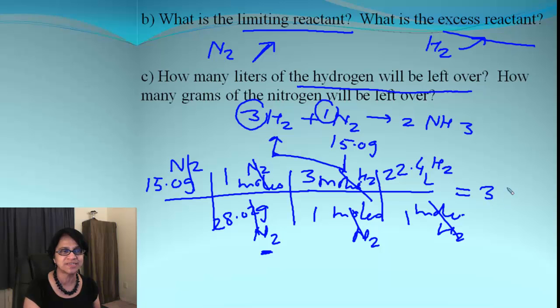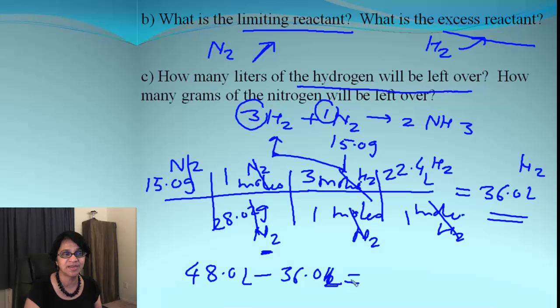And what we get is 36.0 liters of hydrogen. So, how much we had before? We started with 48.0 liters. How much was used up? 36.0 was used up. So it's simple. How much will be remaining? The remaining will be 12.0 liters.